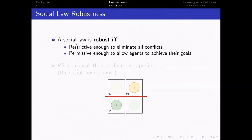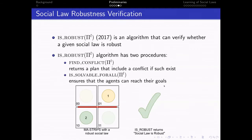We say that the social law is robust if it's restrictive enough to eliminate all conflicts, but permissive enough to allow agents to achieve their goal. So for instance, with this wall, the coordination is perfect. Both of the agents can get to their goal and they can't interfere with each other.